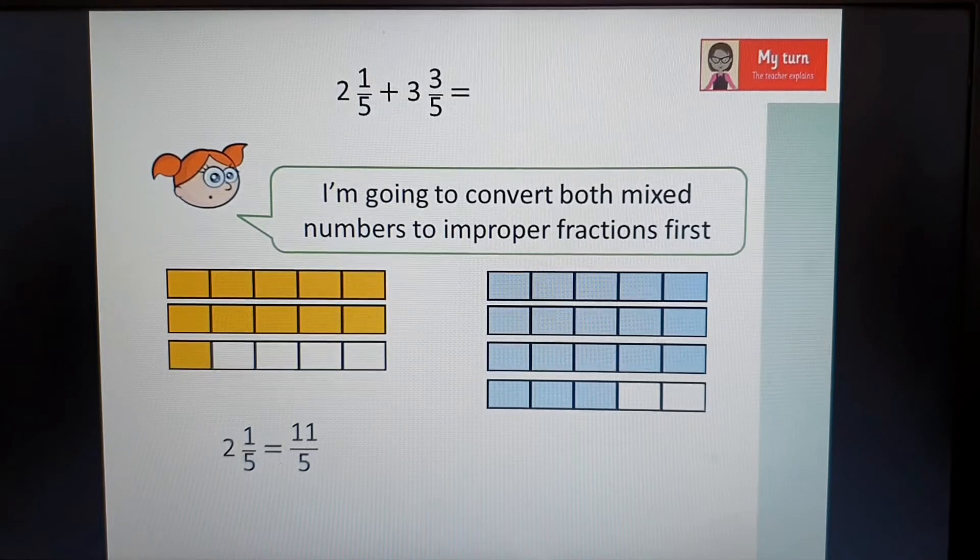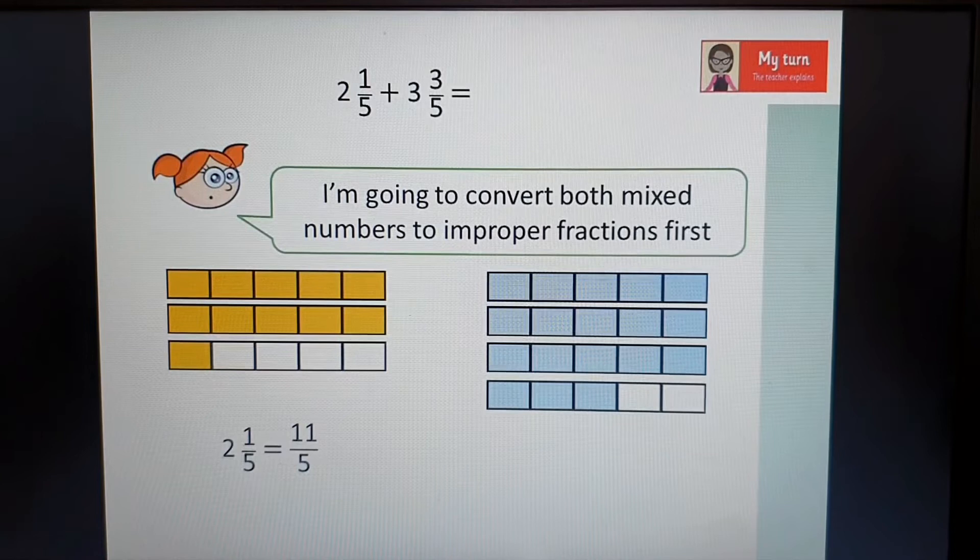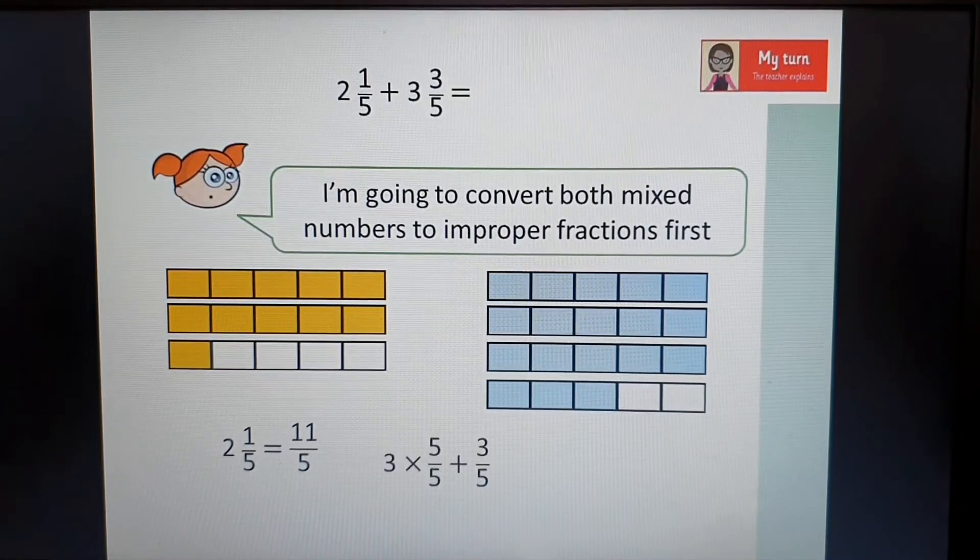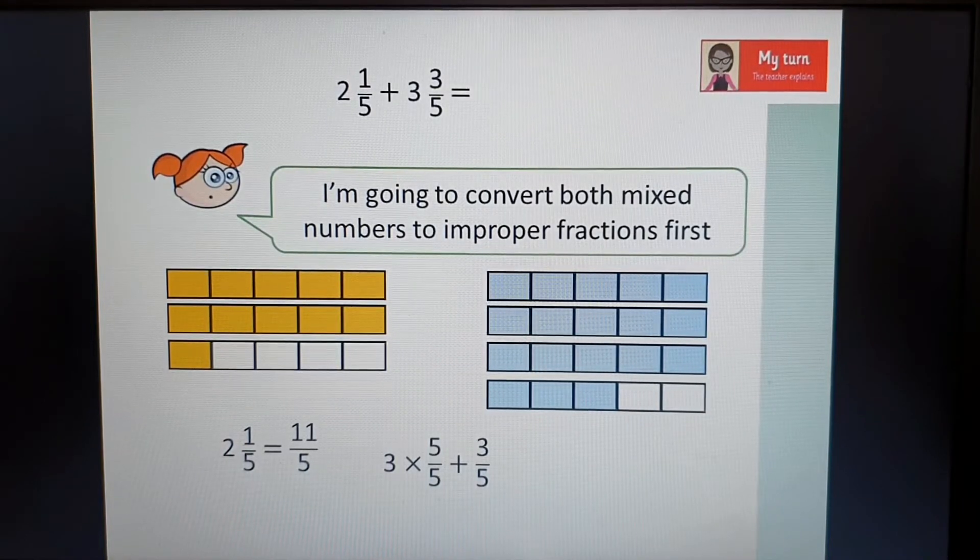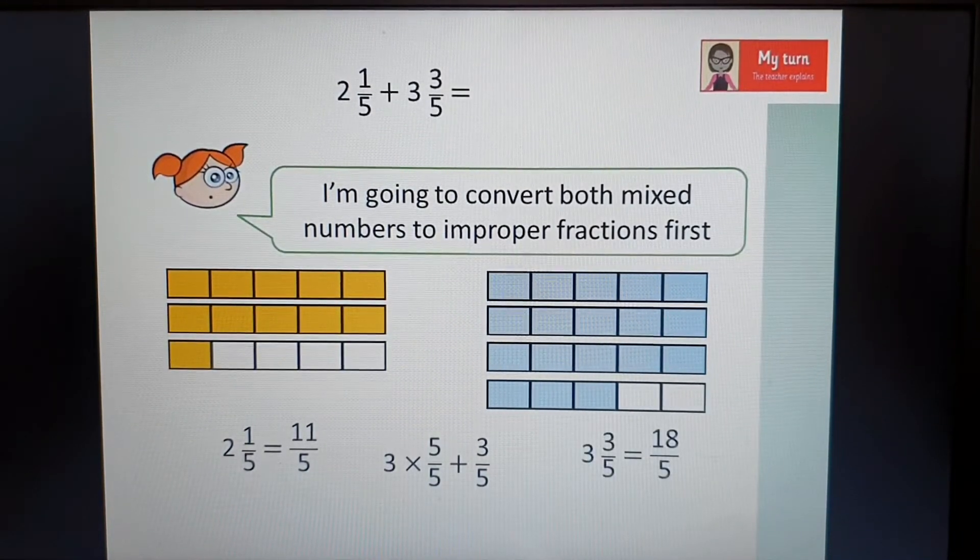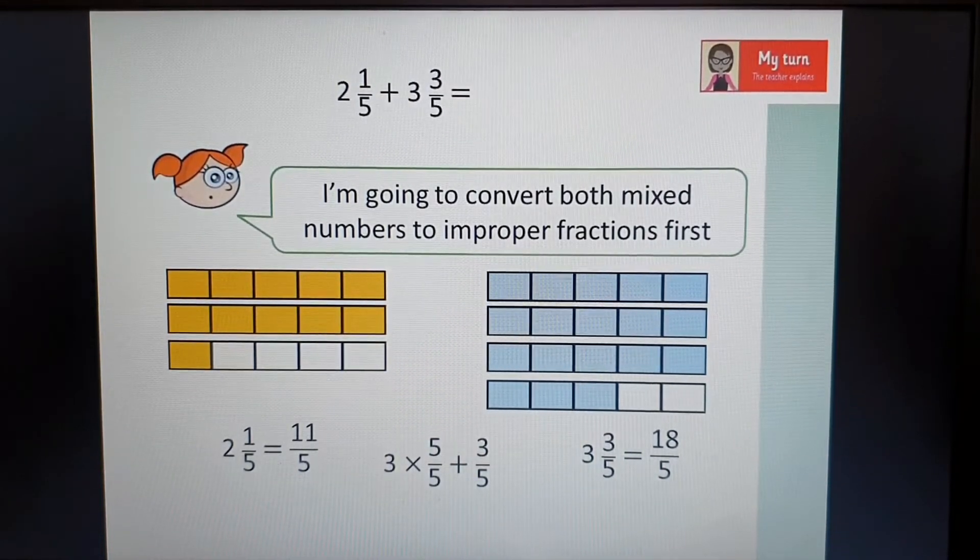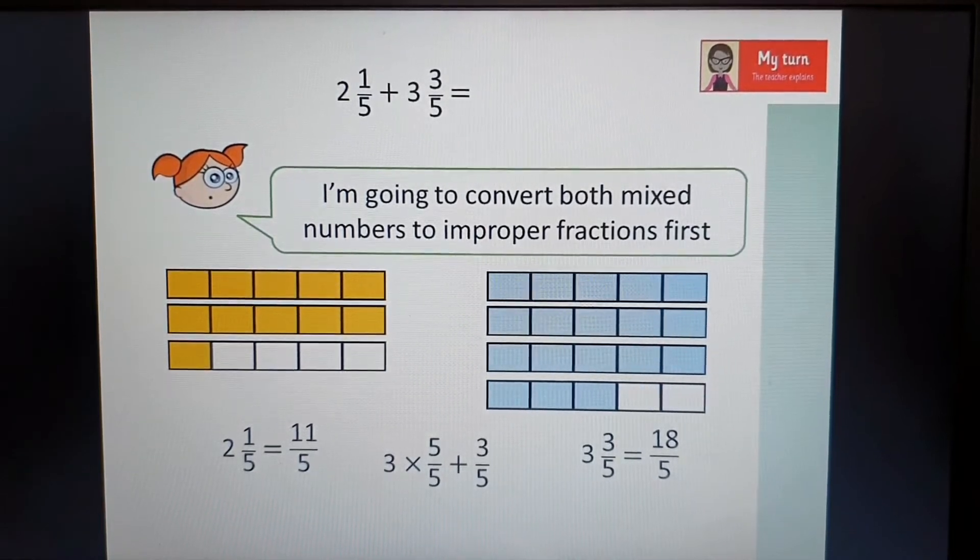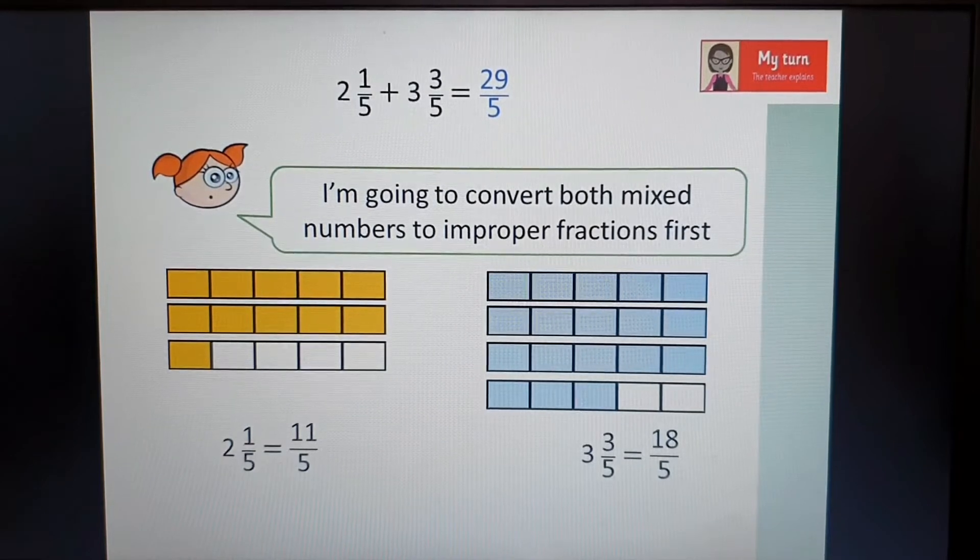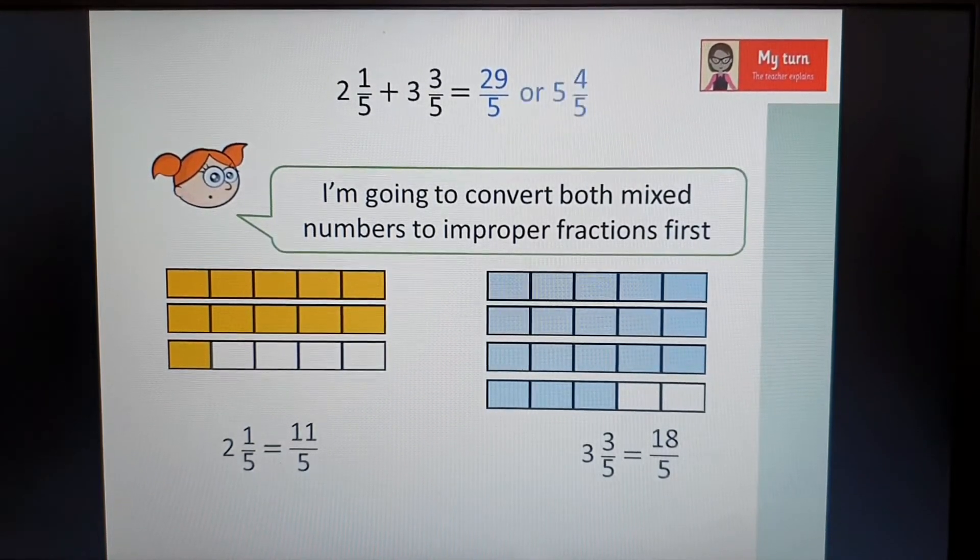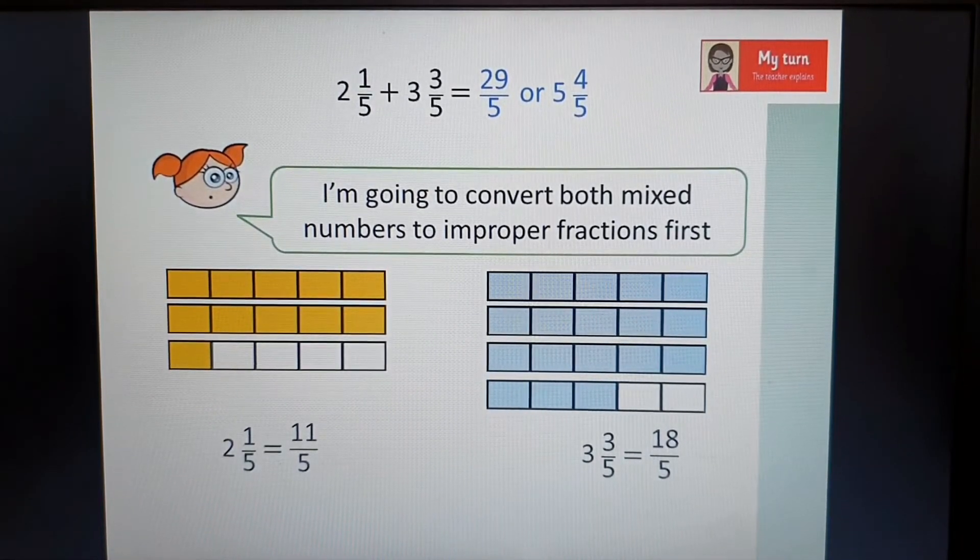My second one's over here. I've got three wholes, so three whole bars there, but they're also split into fifths. So I can count those up and also add on my three fifths. So I've got three lots of five out of five and a three out of five. So in total I'd have 18 fifths. And now I'm going to add these two together. So 11 fifths and 18 fifths all together adds up to 29 fifths, or you can convert it into five wholes and four fifths.